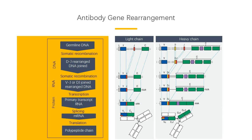Lymphoblast alternative splicing results in secreted IgM. Memory B cells undergo isotype switching to IgG. Somatic hypermutation of IgH occurs in the germinal center of lymph nodes. Mutated Ig are selected for improved antigen binding in a process termed affinity maturation.